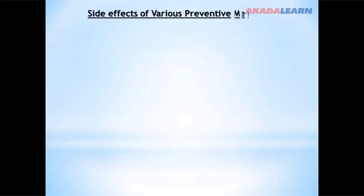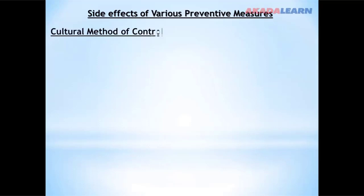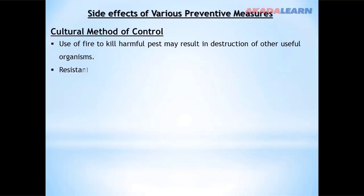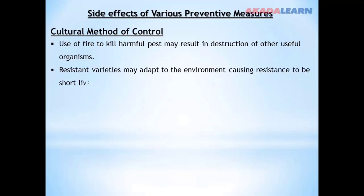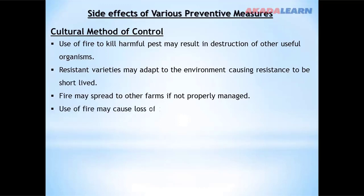Side effects of various preventive measures: every method used in controlling pests may have side effects. For cultural methods, the use of fire to kill harmful pests may result in destruction of other useful organisms. Resistant varieties may adapt to the environment, causing resistance to be short-lived. Fire may spread to other farms if not properly managed, and may cause loss of organic matter in the soil and destruction of soil structure.